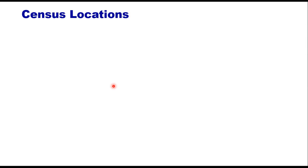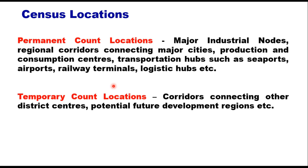Census locations — based on the purpose, count locations can be categorized into two types: permanent count registration or temporary count registration. Permanent count stations are located on major industrial nodes, regional corridors connecting major cities, production and consumption centers, and transportation hubs such as seaports, airports, railway terminals, and logistic hubs. Temporary count locations can be on corridors connecting other district centers or potential future development regions.